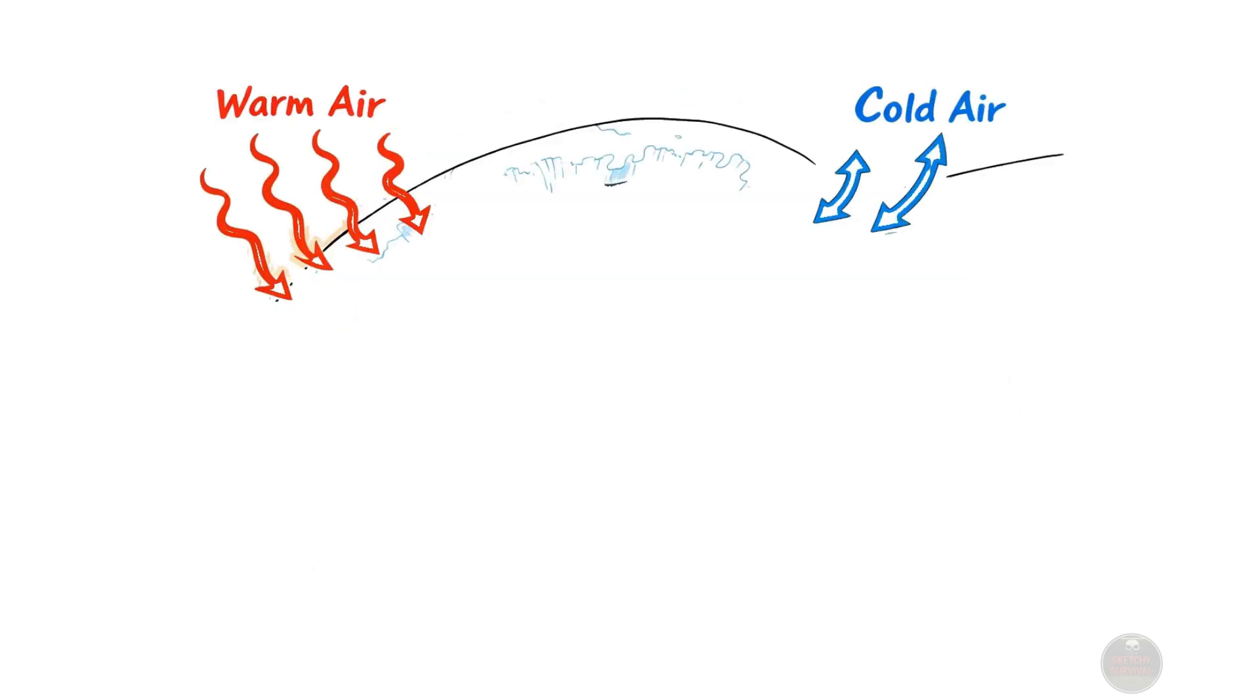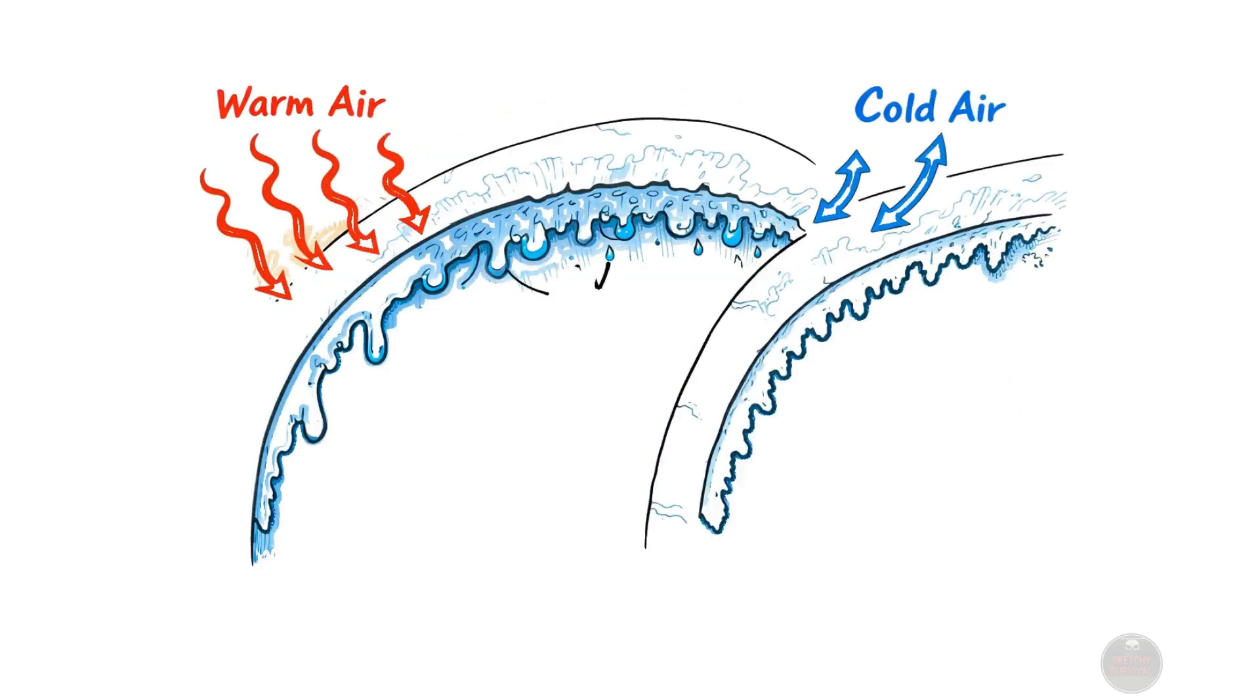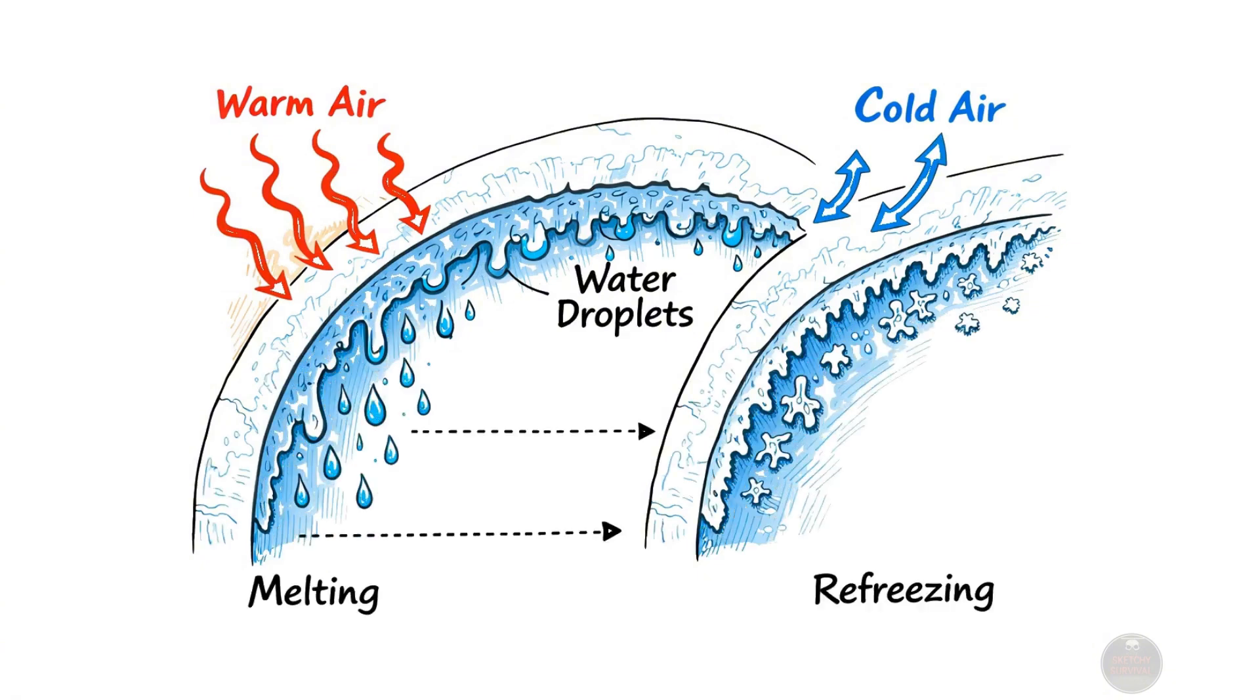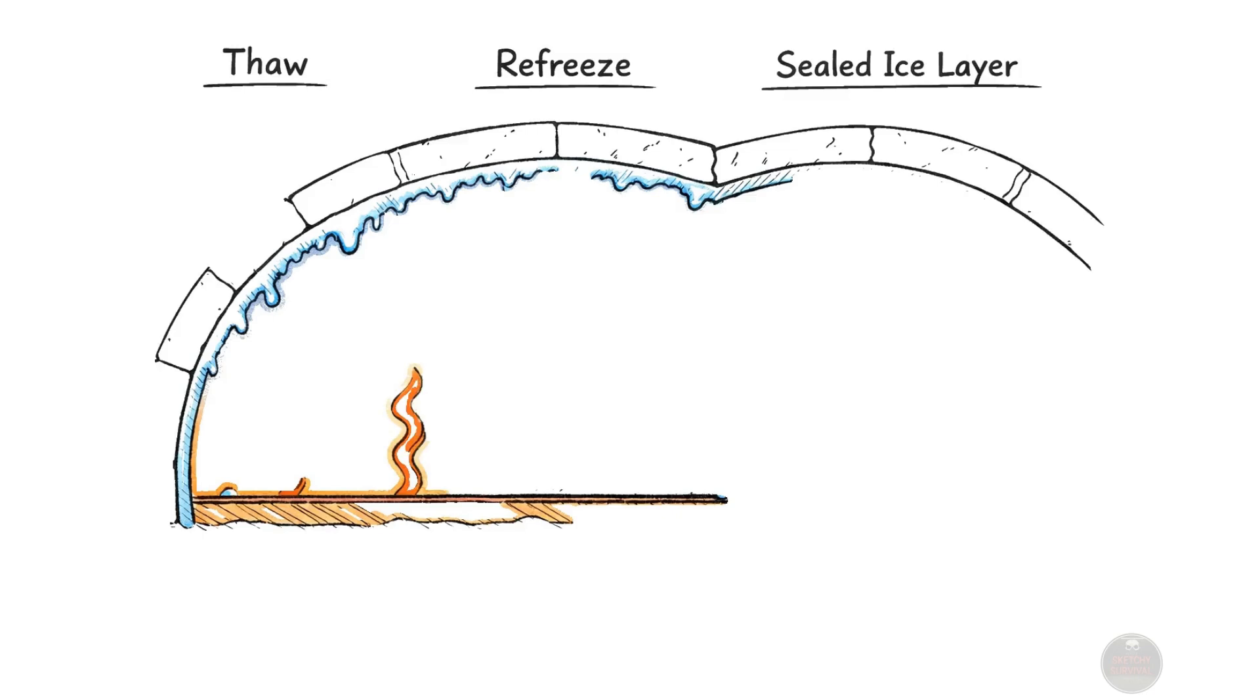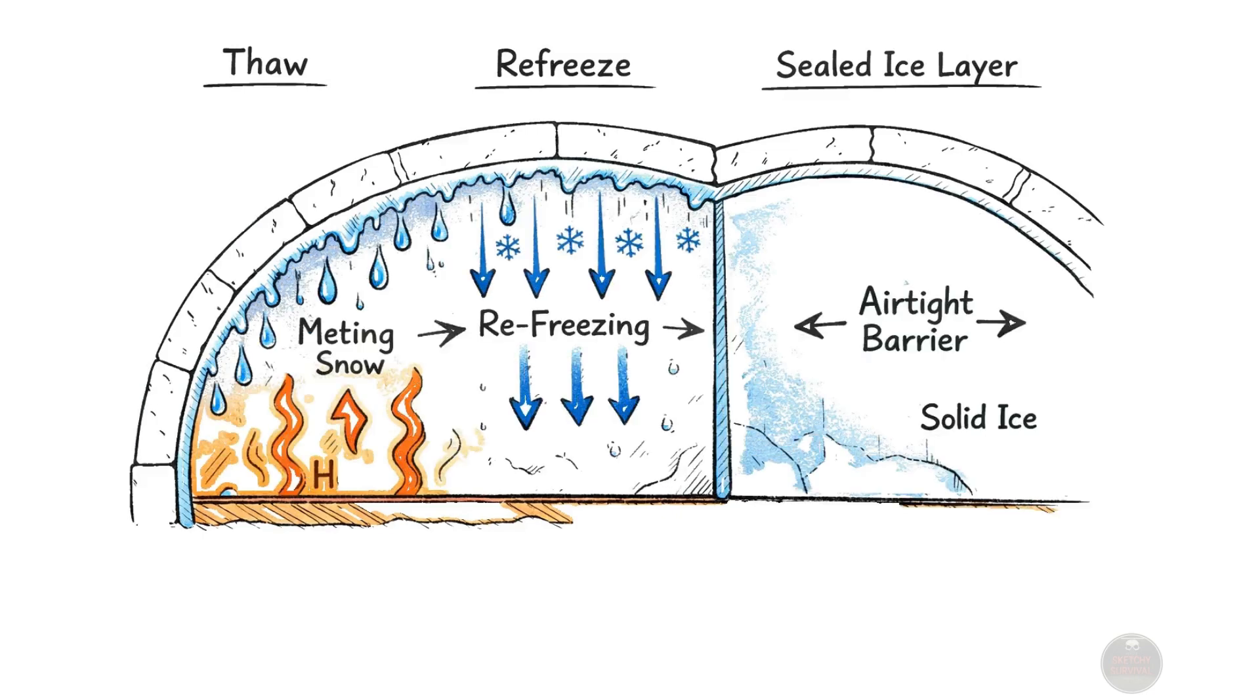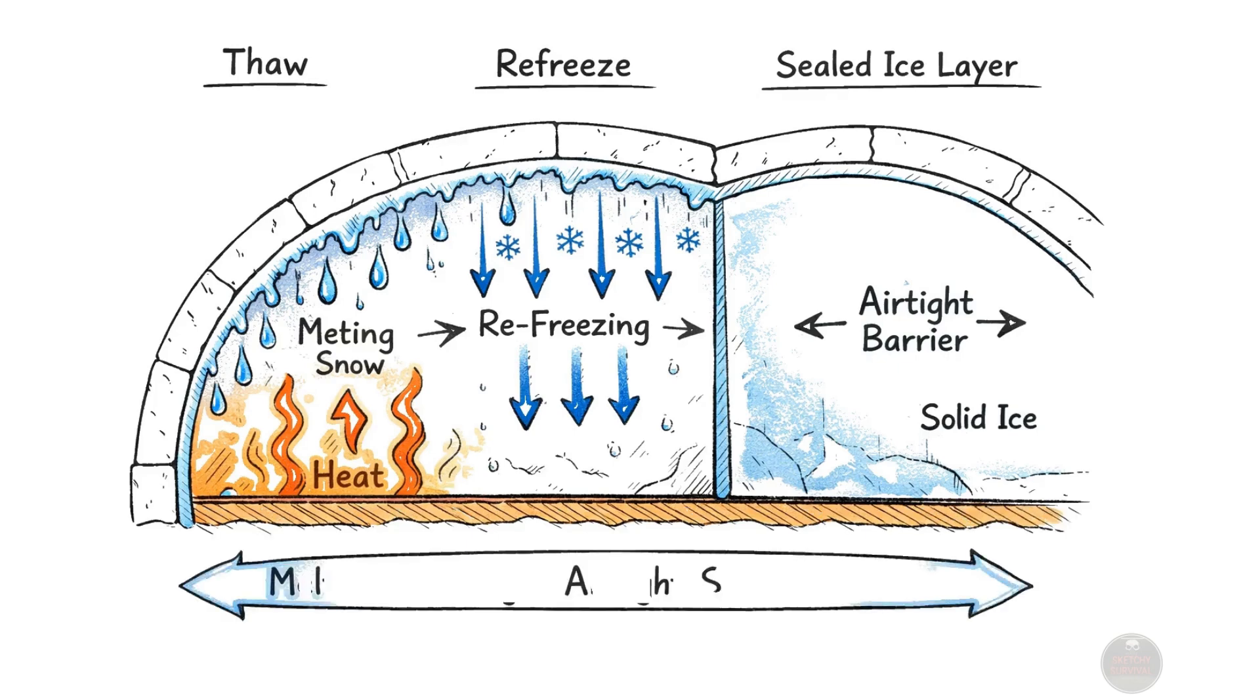Also, the inner walls of the igloo undergo a subtle yet crucial process of slight melting and subsequent refreezing due to the temperature difference. This continuous cycle of thawing and solidifying creates an incredibly strong, almost airtight seal across the entire inner surface of the snow structure.